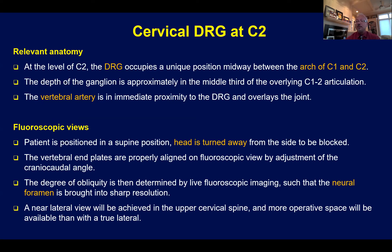Let's talk about the DRG at C2. The DRG occupies a unique position midway between the arch of C1 and C2. The depth of the ganglion is about the middle third of the overlying C1-C2 articulation. The vertebral artery is in immediate proximity to the DRG and overlays the joint. I put the patient in the supine position, though some individuals do this with the patient in the lateral position, which is acceptable if the patient can't lie flat. In the supine position, I turn the head to the contralateral side away from the intended target — so if I'm doing a nerve block on the right side, the head is rotated towards the left.